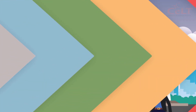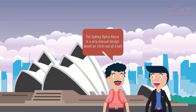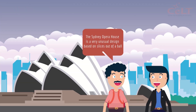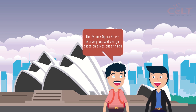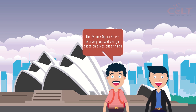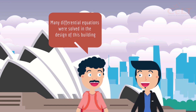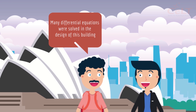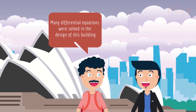What else? The Sydney Opera House is a very unusual design based on slices out of a ball. Many differential equations were solved in the design of this building.